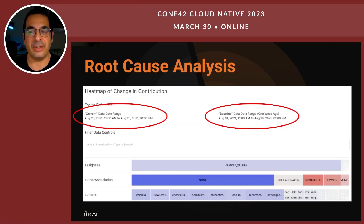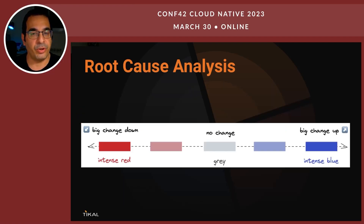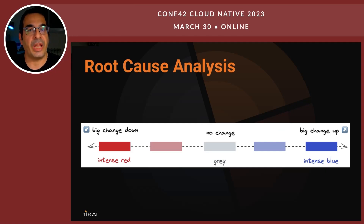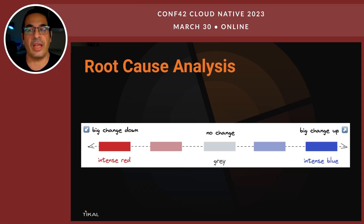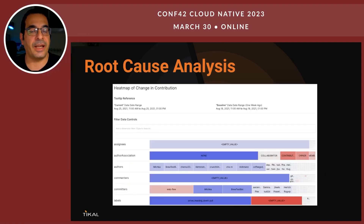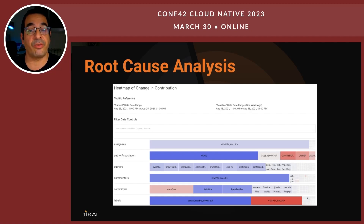There are different colors in the heat map. Deep red means a big change down, and intense blue means a big change up. Looking at the root cause analysis in ThirdEye, we can see certain values which are higher than the baseline and certain values which are lower than the baseline — all of this to help with root cause analysis.